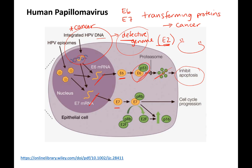E7, on the other hand, binds retinoblastoma — RB — which is a tumor suppressor. Its role is to normally stop the cell cycle and allow the cell to make sure everything is good before cell division. Without that control, cells with damaged DNA can progress through the cell cycle. E7s from high-risk HPVs can also bind to other tumor suppressors, further promoting cell cycle progression.